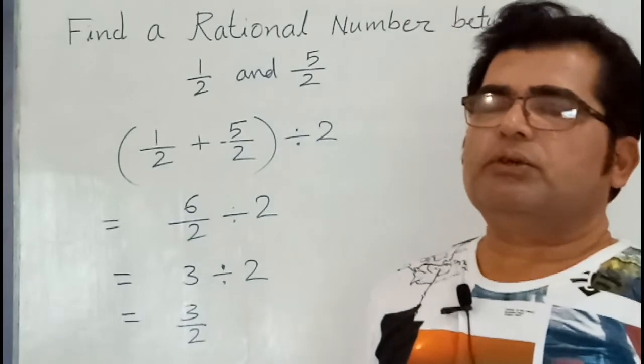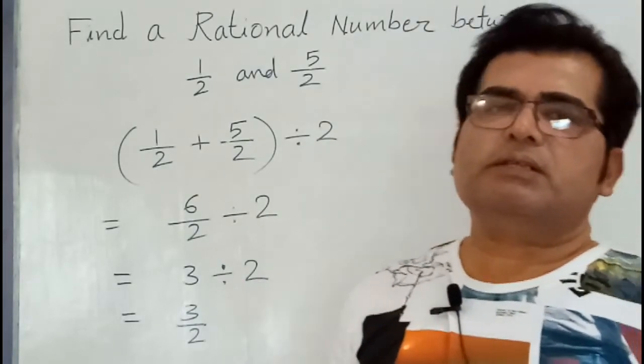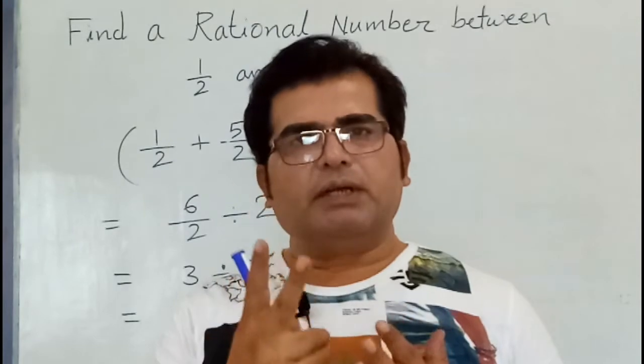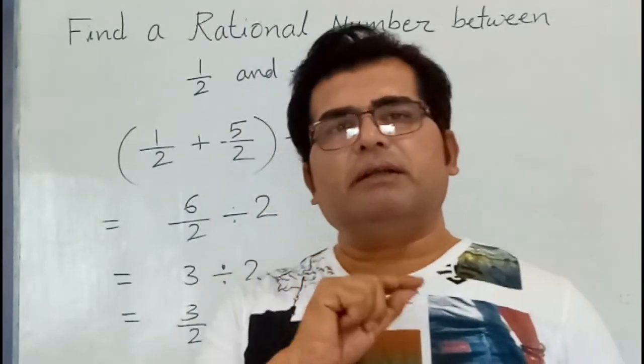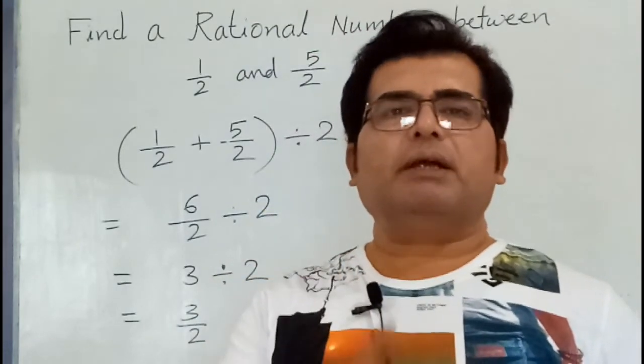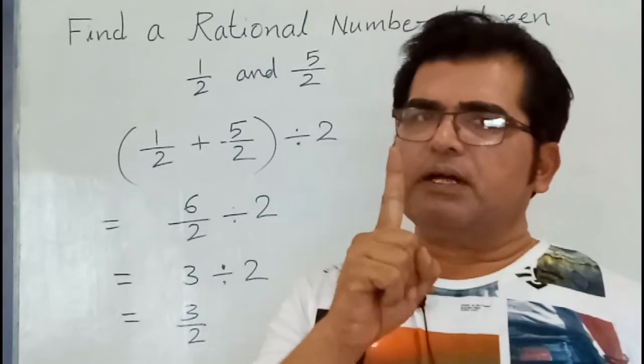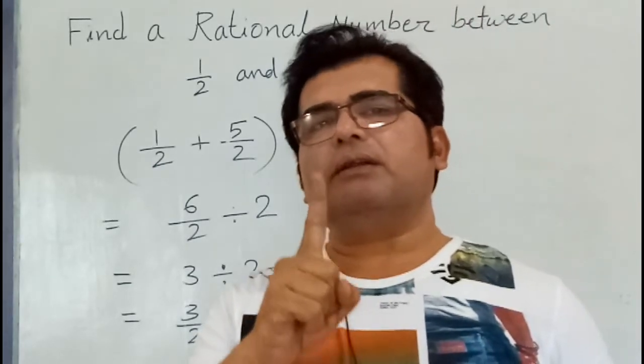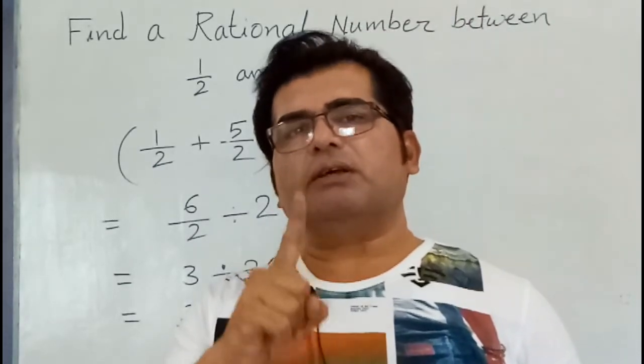So you need not do anything. Just add both the rational numbers and divide by 2. You will get exactly one rational number between two rational numbers.